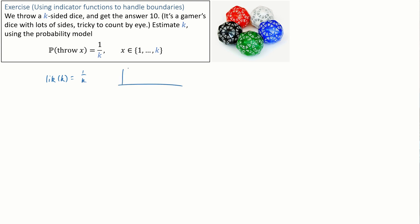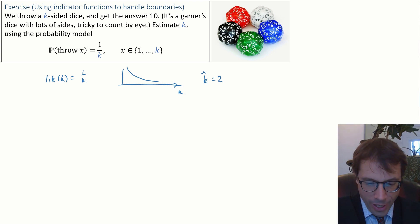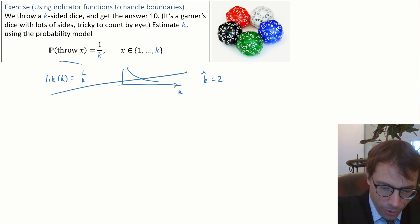Well, sketch this function. The optimum is clearly k as small as possible. I suppose we'd have to say k equals 2. It's hard to imagine a one-sided dice. This is absurd. How on earth could we have got the answer 10 from a one-sided dice? We've done something wrong.